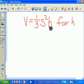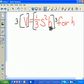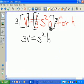We can do that by dividing by one-third, but dividing by a fraction is the same as multiplying by the reciprocal. So we're going to multiply each side by 3 to get rid of that one-third. That gives us 3V equals S squared H.